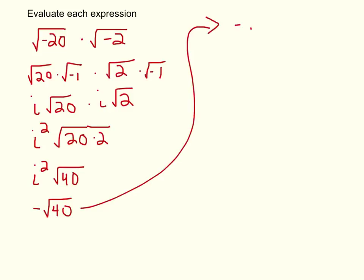So I've got negative square root of 40. I can do my factor tree on this. 40 is the same thing as 4 times 10. 4 is the same thing as 2 times 2. And 10 is the same thing as 2 times 5.